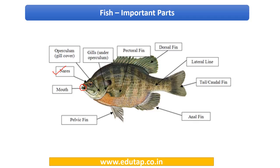Then we move on to the respiratory organs of fish, which are the gills. There is usually an operculum, which is a gill cover. This operculum might be very prominent in some species of fish and not very prominent in others — that is not very important for us, just for your information.